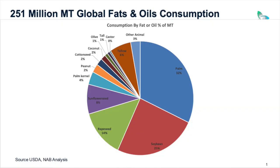Let's take a look at world consumption of fats and oils — that's a little over 250 million metric tons per year. Looking at the pie chart, palm is very important: palm at 32% and palm kernel at 4%, so over a third of the world's fats and oils are coming from the oil palm.